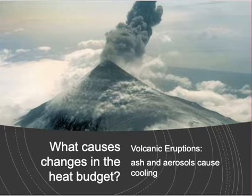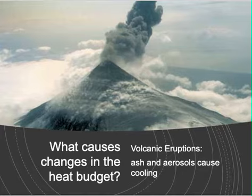Another thing that can upset the heat balance is a lot of volcanic activity. Many volcanic eruptions put ash and aerosols into the air, which can prevent sunlight from reaching the Earth's surface — it gets reflected back into space, resulting in less incoming solar radiation. Therefore the climate tends to cool down, and periods of heavy volcanic activity tend to produce slightly cooler climates in the years that follow.